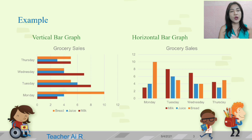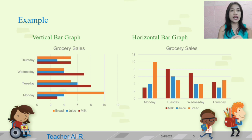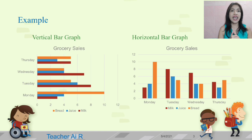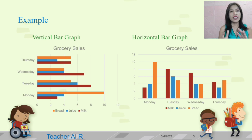You can see on the lowermost are the days: Monday, Tuesday, Wednesday, and Thursday. The colors are still the same as the vertical bar graph — maroon as milk, blue as juice, and orange as bread. The sales go from 2, 4, 6, 8, 10, and 12. The only difference is the orientation of the bars.